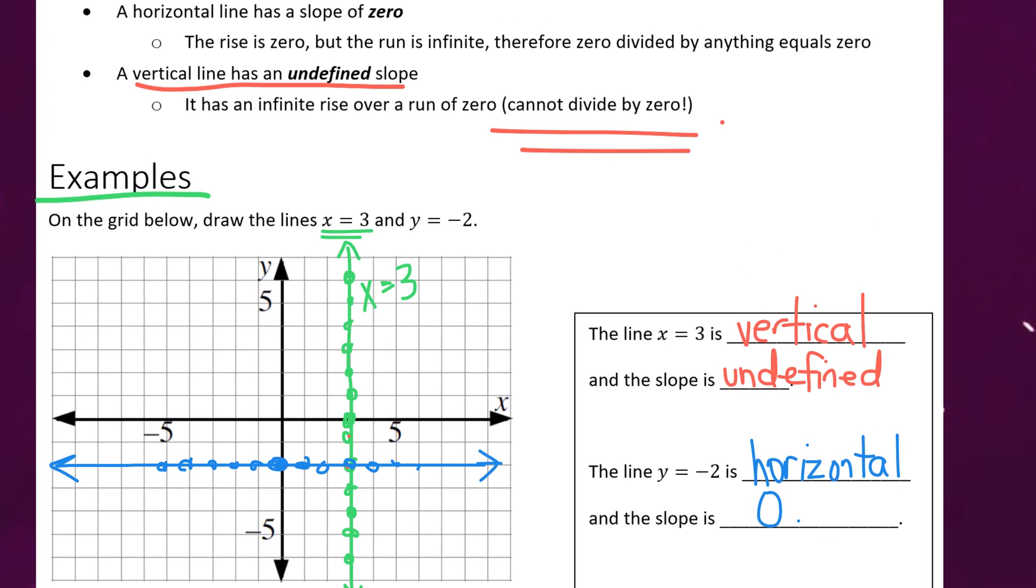Why is the slope zero? Well, that's because in this case, the rise is zero. Because we're moving from one point to the next, we're not moving up or down. Therefore, the rise is zero. So when we divide zero by one, for example, we would get an answer or a slope of zero. So that's explained up here. Horizontal line has a slope of zero. And zero divided by anything would be equal to zero.